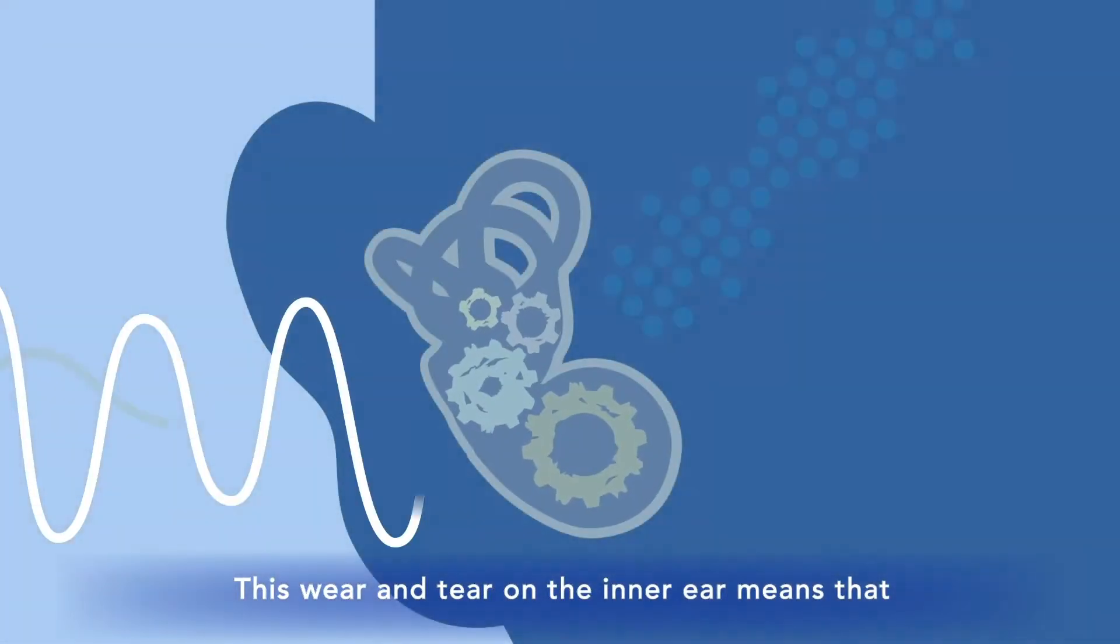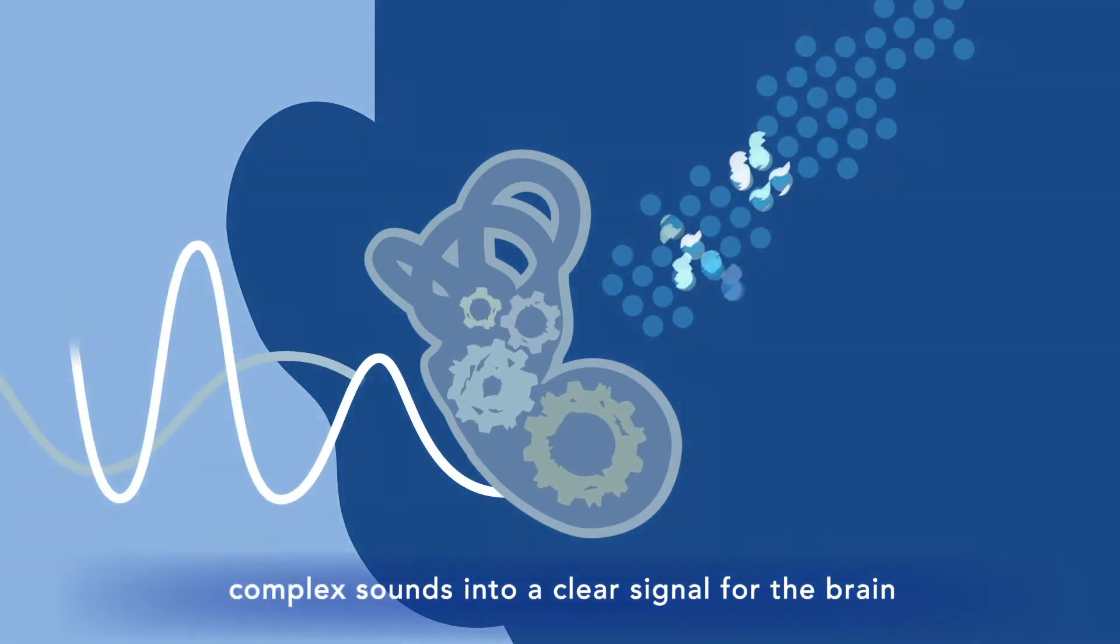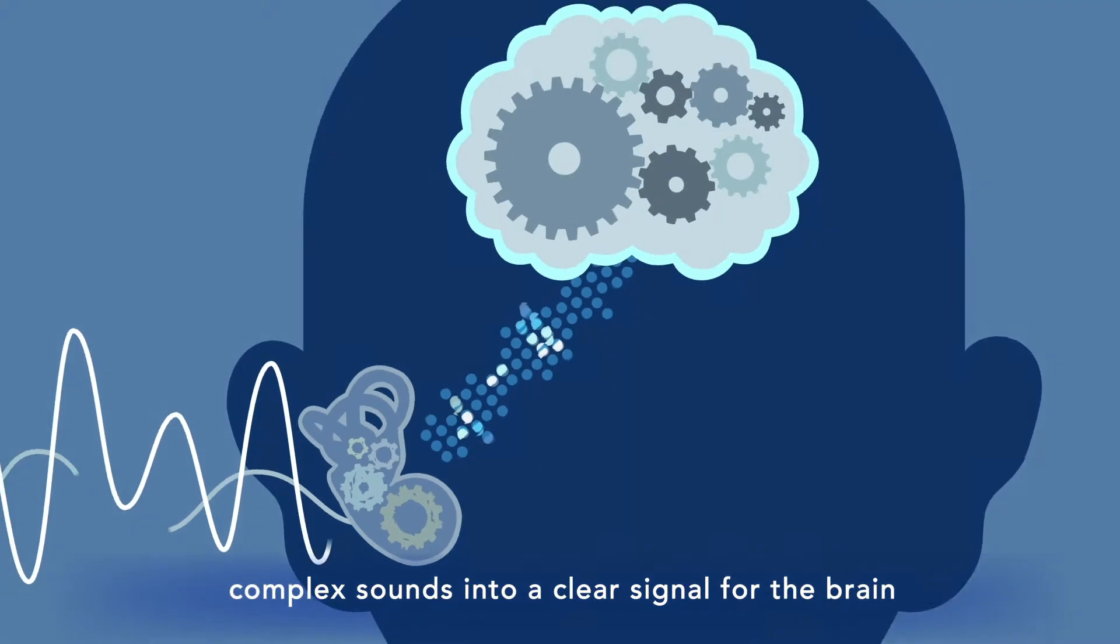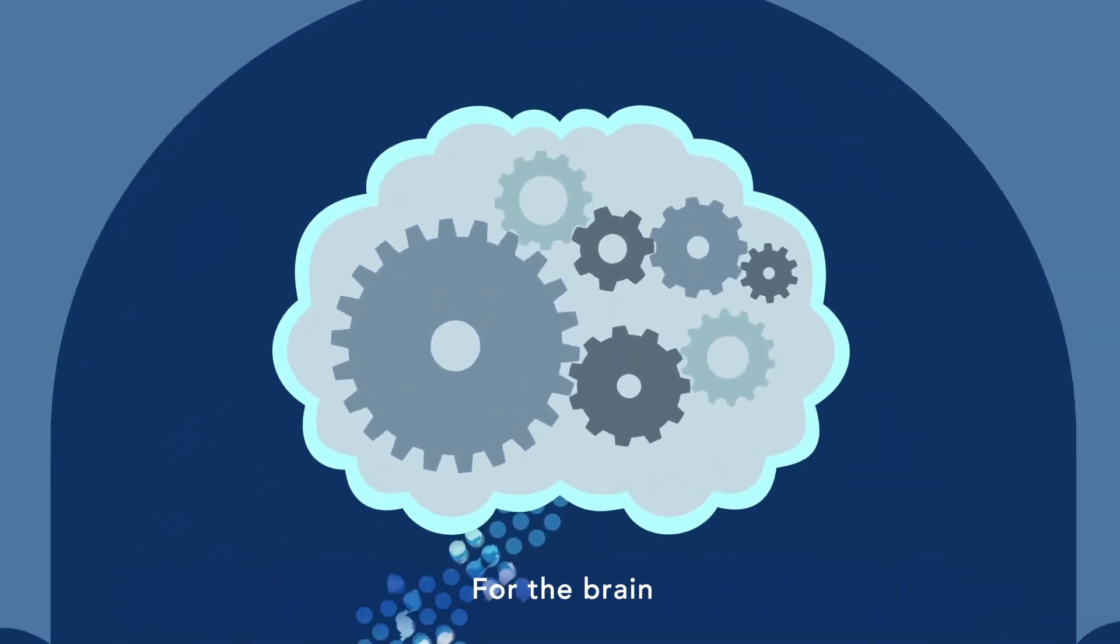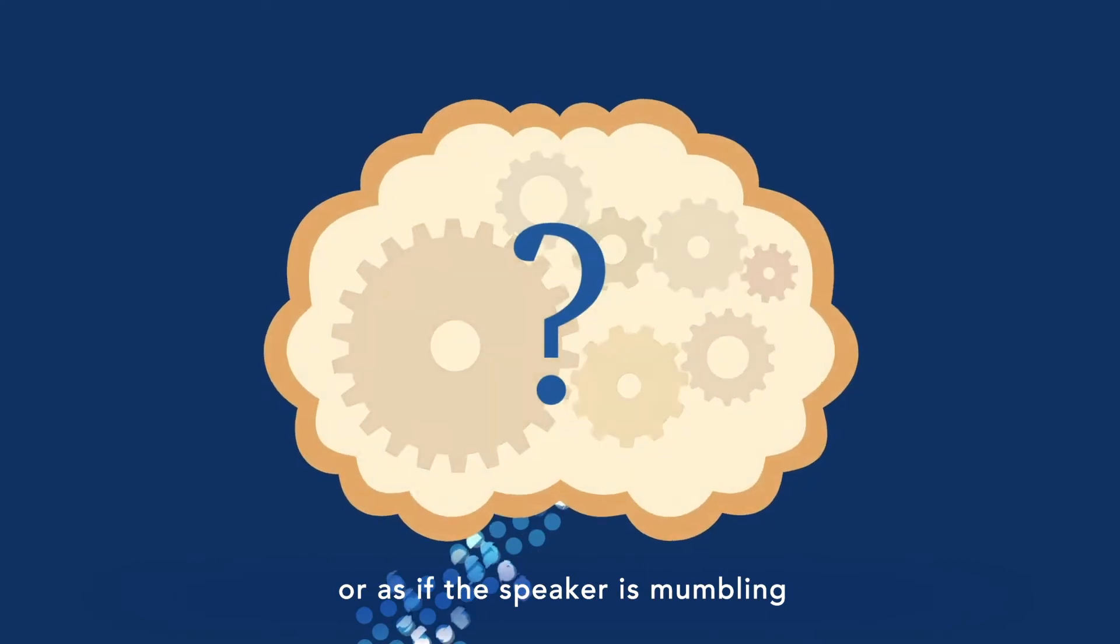This wear and tear on the inner ear means that the damaged ear can no longer accurately convert complex sounds into a clear signal for the brain. For the brain, the signals that are received often sound garbled or as if the speaker is mumbling.